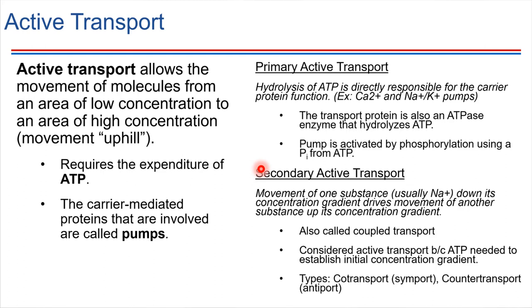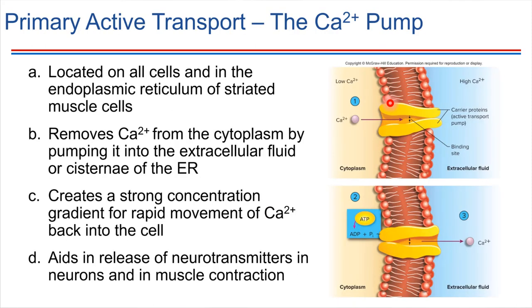We'll look at a couple of examples going forward, starting with primary active transport. The calcium pump is located on all cells, and it's also in the endoplasmic reticulum of certain muscle cells. We'll encounter this when we look at the muscular system later on, but right now we're using it as an example of primary active transport.